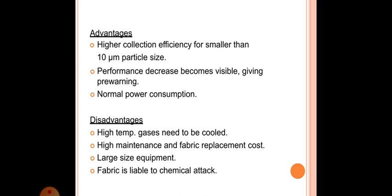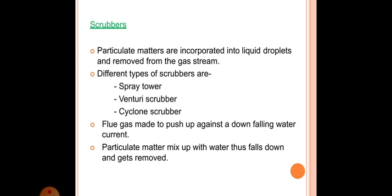Scrubbers: particulate matters are incorporated into liquid droplets and removed from the gas stream. Different types of scrubbers are spray tower, venturi scrubber, cyclone scrubber. Flue gas made to push up against a down falling water current. Particulate matter mix up with water, dust falls down and gets removed.